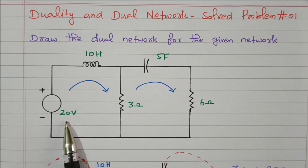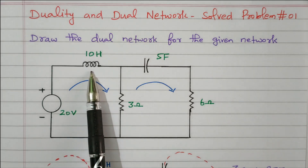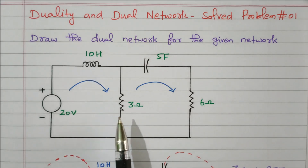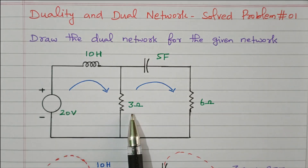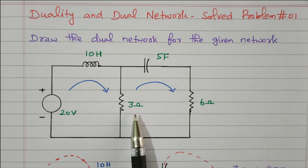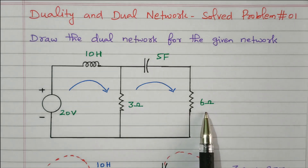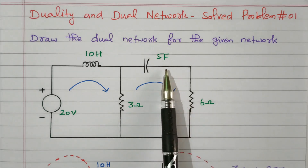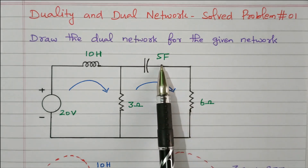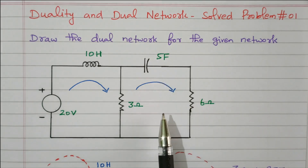A 20-volt voltage source is available. Inductor of 10 Henry. Two resistors: 3 ohm and 6 ohm, and one capacitor of 5 Farad. For that, we need to draw the dual circuit.